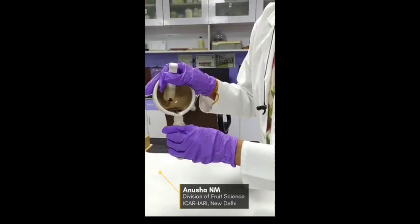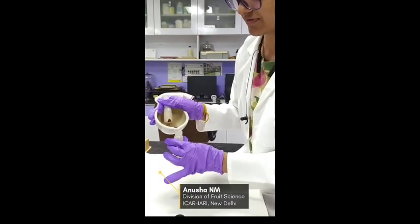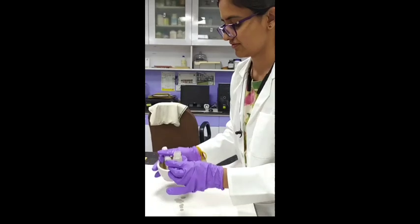Then we pour this mixture obtained by crushing grapes in ethanol into a centrifuge tube.